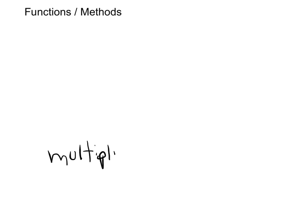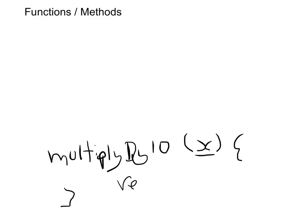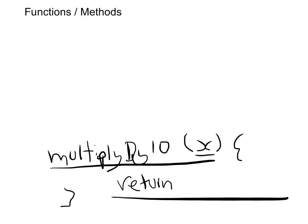To put this into a real-life example: say I wanted a function that, whatever number I give it, multiplies it by 10. So I'm going to call my function 'multiplyByTen', and x is going to be the number I give it. I want it to say: okay, you've given me x, you want to multiply by 10 — so we need to return x times 10. It's as simple as that.